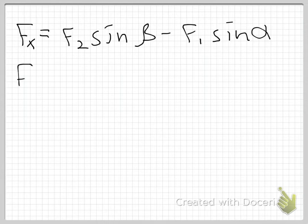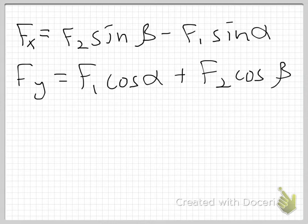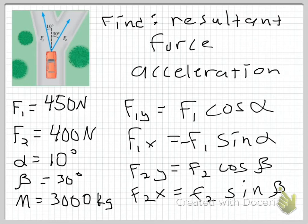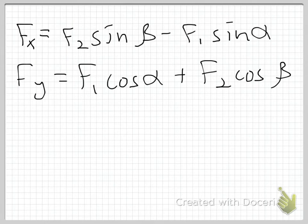My y components, these are both positive. I have F1 cosine of alpha plus F2 cosine of beta. Let me make sure I got that right. Yep. The positive F1y, positive F2y. I just add those together, and I get this. So I'm going to assume that I can just plug this into my calculator and get some numbers because I know what all these things are.